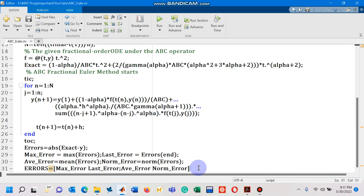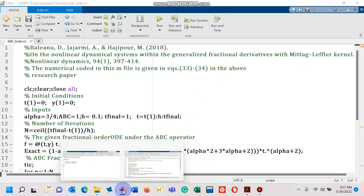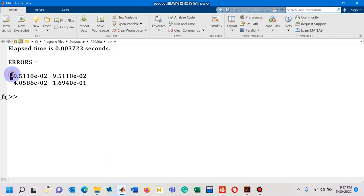So, let me run this code with the step size 0.1. Okay. So, now I will have to go to the command window and you can see that this is the maximum error. 9.5118, 10 to the power minus 2 is the last error. Similarly, this number is the average of all the errors and this is norm.